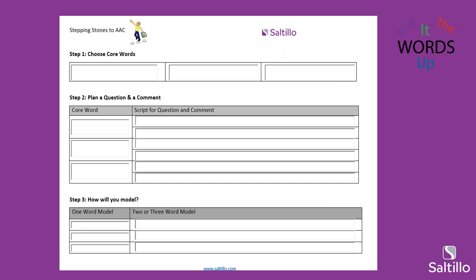With that video in mind, we're going to fill out the organizational tool together. In the chat window, share what are some core words that you heard me using throughout that video. Up and down — good. I see — good. I like — yep. Go up, down, walk, fast, see. What, go — you guys are catching on. I tried to use as many as I could because there's so much we could talk about using those words.